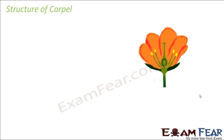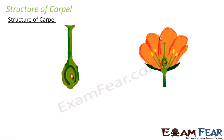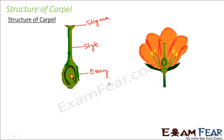Now let us look at the structure of the female reproductive part, that is the carpel. This central structure, which is swollen at the bottom with a tube-like structure above it, is the carpel. Carpel consists of three important parts: style — the tube-like structure; ovary — the swollen structure at the bottom; and stigma — the slightly swollen structure at the top of the style. So stigma, style, and ovary are the three important parts of the carpel.